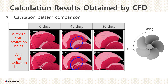This slide shows the cavitation simulation comparison using the calculation results obtained by CFD. When the top position is set to 0 degrees, the cavitation patterns at 0, 45, and 90 degrees of rotation angle are shown. Looking at the cavitation pattern at 45 degrees of rotation angle, for the propeller with anti-cavitation holes there is less volume of cavitation than without anti-cavitation holes. This indicates that drilling anti-cavitation holes can suppress the volume of cavitation.